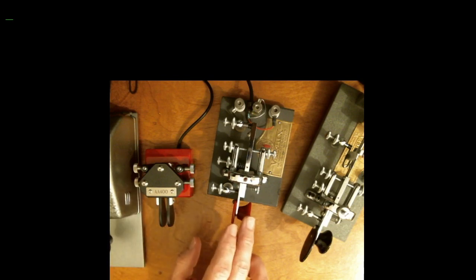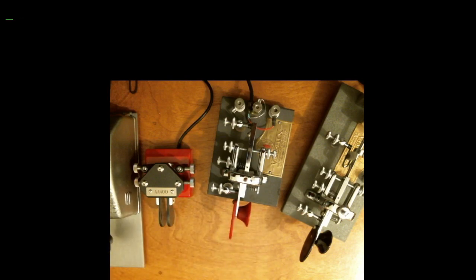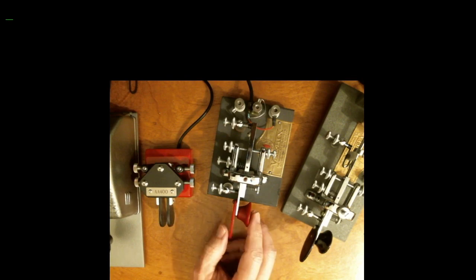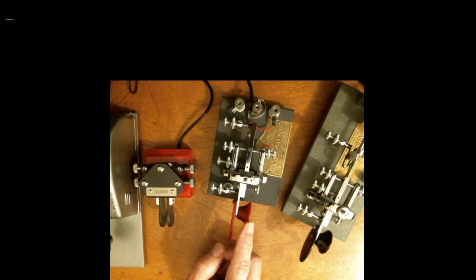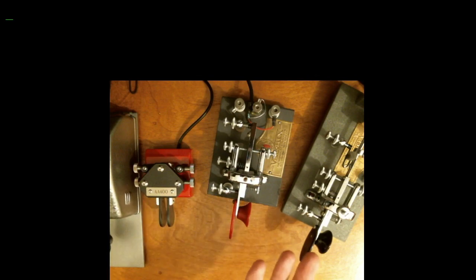If the inter-character spacing in a word is three elements, between words, we're supposed to have seven elements. Seven elements is the recommended spacing between words. That's a dit and two dahs worth of elements. Because a dah is three, a dit is one, so a dit and two dahs. What's a dit and two dahs? Well, a W is a dit and two dahs, or you could do it the other way around.